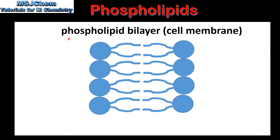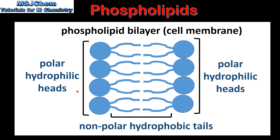Phospholipids form a phospholipid bilayer which is found in the cell membrane. On the outsides of the bilayer we have the polar hydrophilic heads. On the inside of the bilayer we have the non-polar hydrophobic tails.